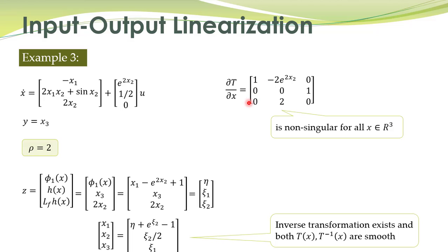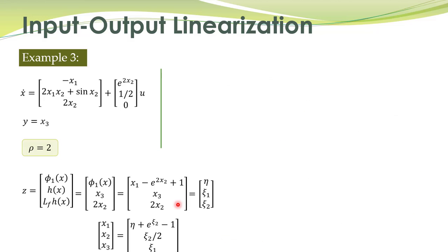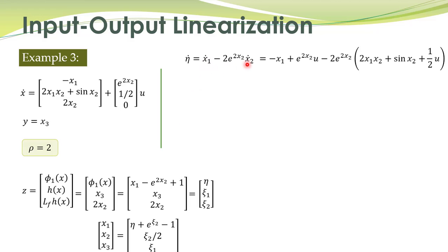The matrix is full rank and non-singular, hence this transformation is a diffeomorphism. Its rank is equal to 3 for any x in three-dimensional space. Once we have this transformation, the rest of the procedure is straightforward. eta dot from this expression is given by substituting x1 dot and x2 dot, yielding an expression that can be rearranged into a particular form.